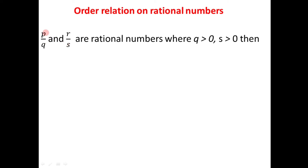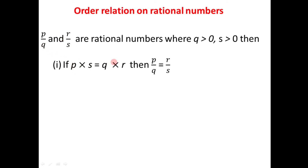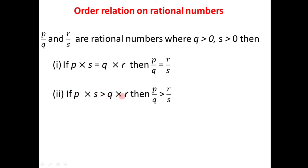Now let's study the order relation on rational numbers. Suppose we have two rational numbers p divided by q and r divided by s, where q must be greater than 0 and s must be greater than 0. We multiply the numerator of the first number by the denominator of the second to get p times s, and then multiply q and r. If these two products are equal, then the two numbers are equal: if p times s equals q times r, then p over q equals r over s. If the first product is greater than the second — that is, p times s is greater than q times r — then p divided by q is greater than r divided by s.